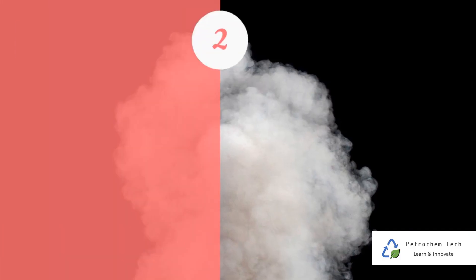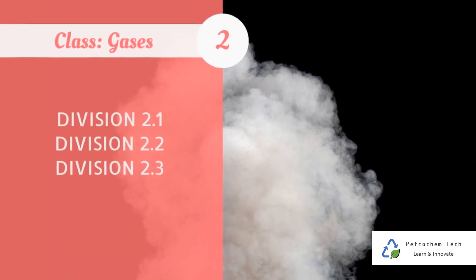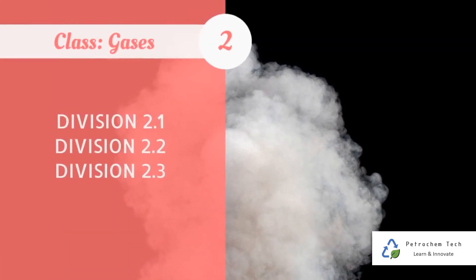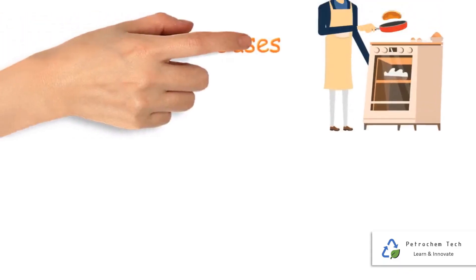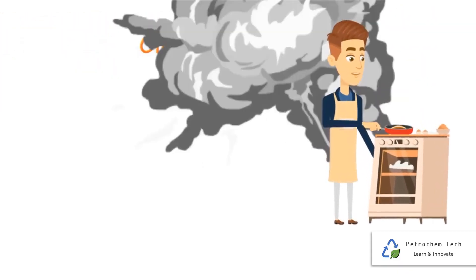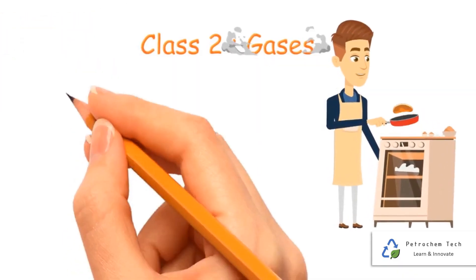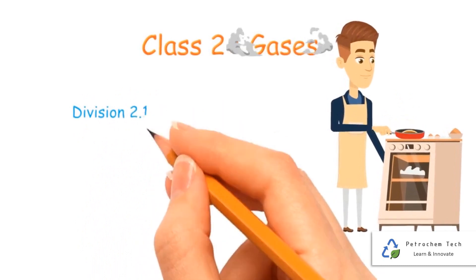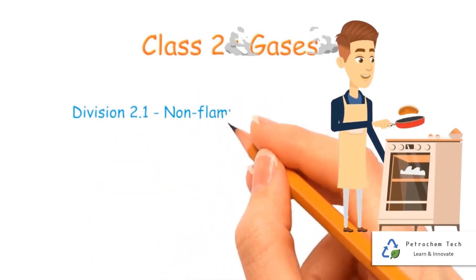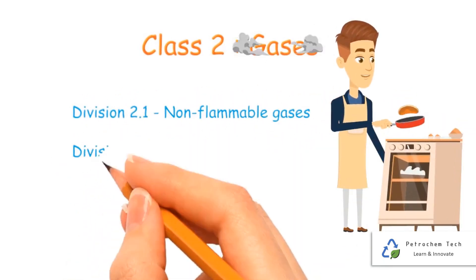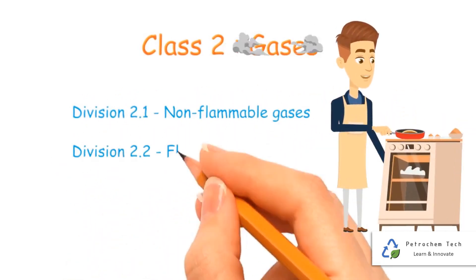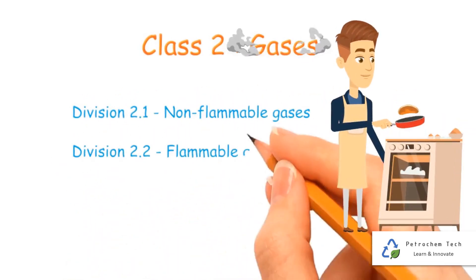Class 2 - Gases, consisting of three divisions. Gases are mostly carried under pressure to reduce their volume and hence to save space in transport and storage.